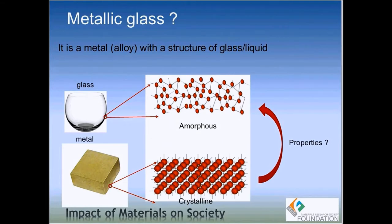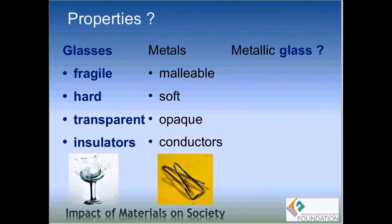This difference in the arrangement of atoms, molecules, or ions can strongly affect the properties of the material. We know glasses and metals very well because they have been part of our society for a long time. You can find examples of glasses and metals almost everywhere — in your office, your car, or a plane. We know glasses are fragile and break easily, whereas metals are more malleable — we can easily deform and reshape them.